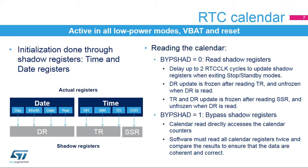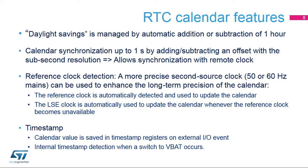This synchronization delay can be up to two RTC clock periods. When the bypass shadow registers control bit is set, the actual calendar registers are read directly. The advantage is that there is no need to wait for the synchronization delay. The disadvantage is that the read values can be false or not consistent due to synchronization issues, so they must be read twice and compared with previous read values to ensure they are correct and coherent.